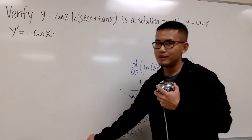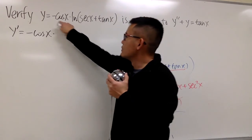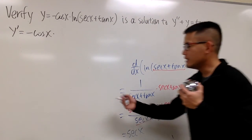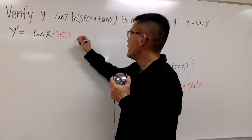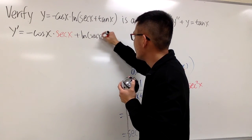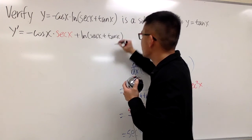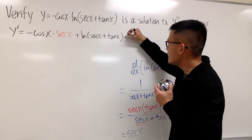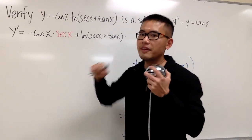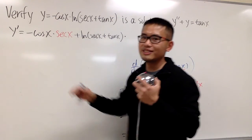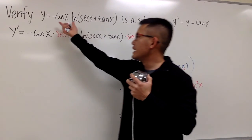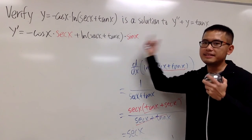Coming back to the product rule: I keep the first function and multiply by the derivative of the second, which is sec x. Then we add the second function, ln(sec x + tan x), multiplied by the derivative of the first. The derivative of negative cosine x is positive sine x. So altogether we have: negative cosine x · sec x, plus sine x · ln(sec x + tan x).